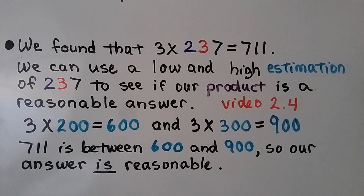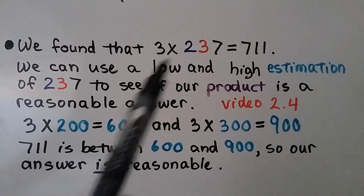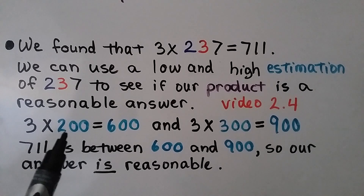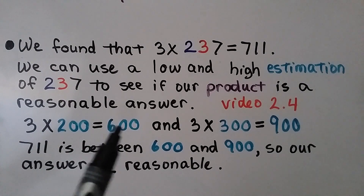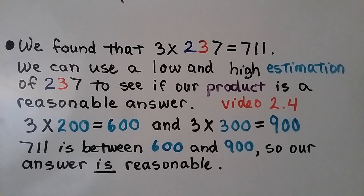We found that 3 times 237 is equal to 711. We can use a low and high estimation of 237 to see if our product is reasonable — we learned how to do that in video 2.4. Since 237 is between 200 and 300, our low estimate is 3 times 200 equals 600, and our high estimate is 3 times 300 equals 900. Since 711 is between 600 and 900, our answer is reasonable.